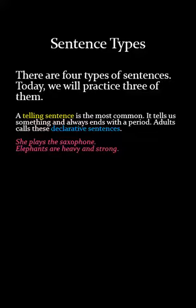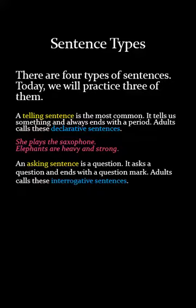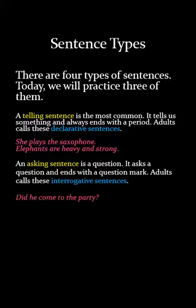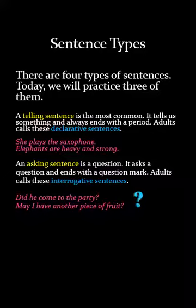An asking sentence, as you know, is a question — it asks a question and ends with a question mark. Adults call these interrogative sentences. Again, if you don't remember that word, that's okay. So 'Did he come to the party?' or 'May I have another piece of fruit?' — these are asking sentences, or interrogative sentences.